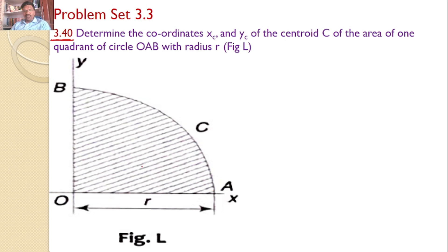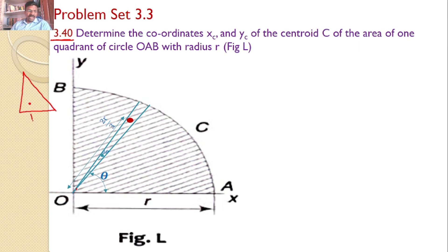Given that it is a circle, to find the centroid of the quarter circle, let us consider a small triangular strip which is at an angle theta from the x-axis and let the width of the angle be d theta. The shape of the small strip is shown. The centroid of this strip is at a distance of 2R by 3 from the origin because it is a right angle triangle. For the right angle triangle, the centroid is at a distance of 2B by 3 and 2H by 3.